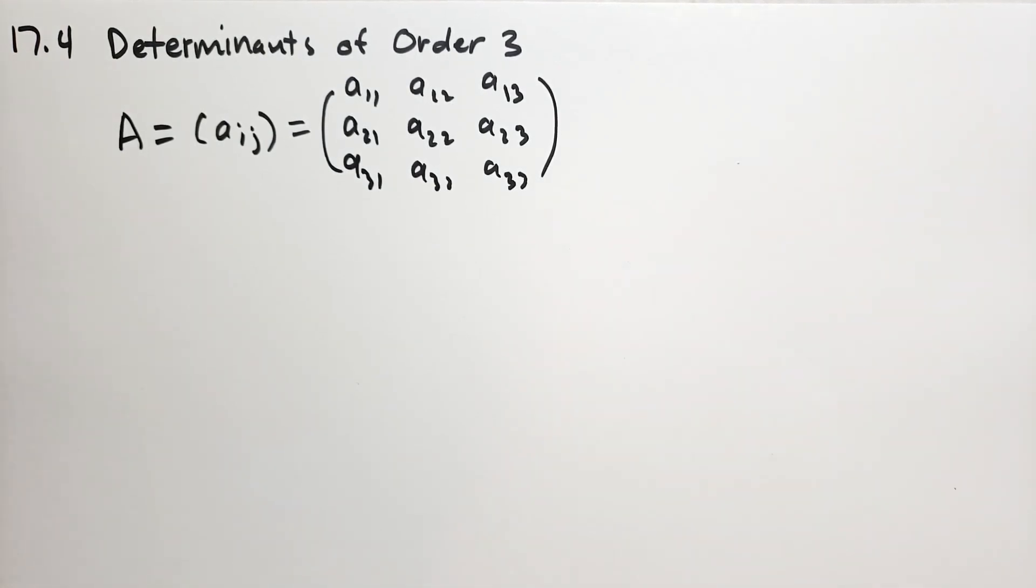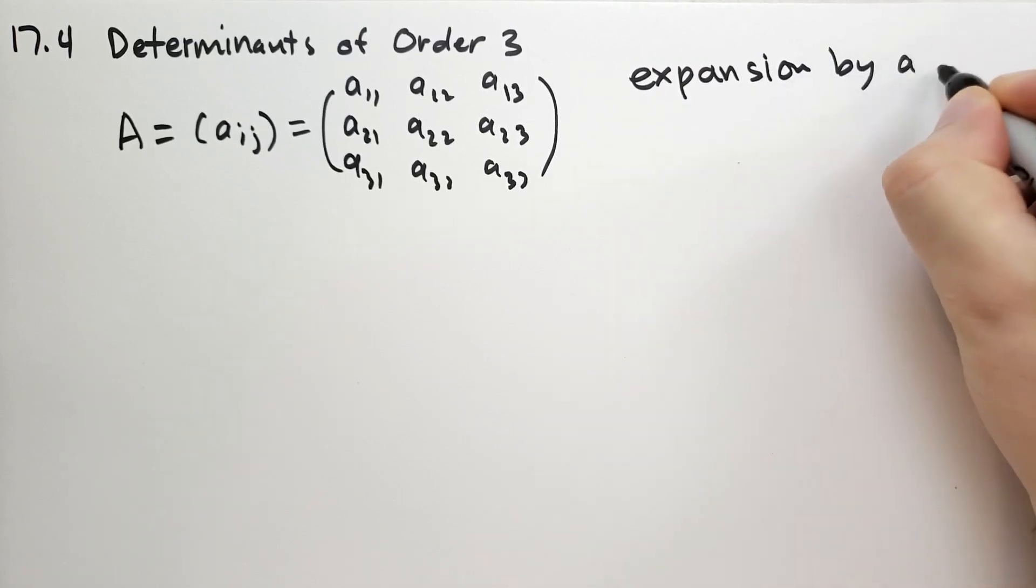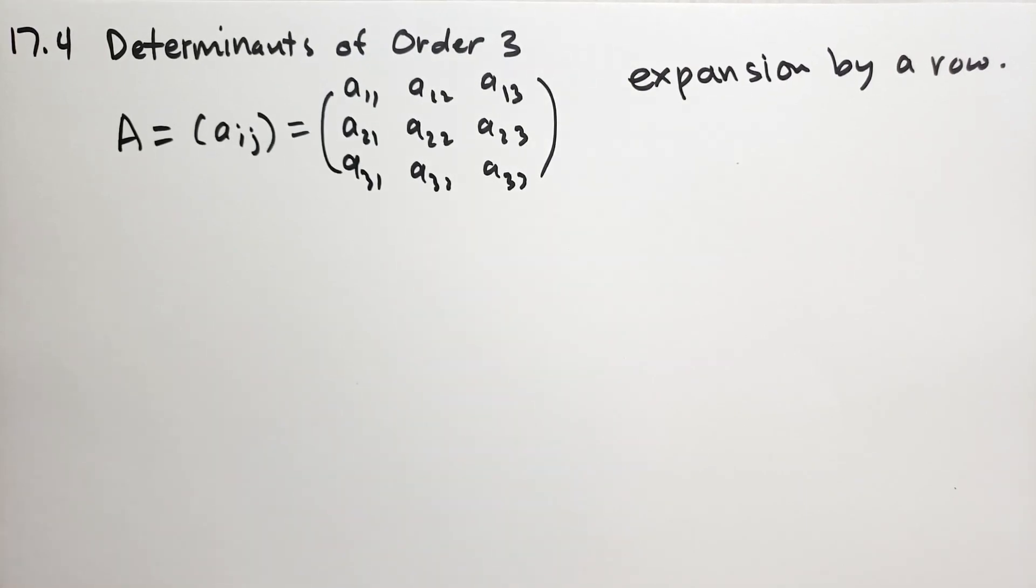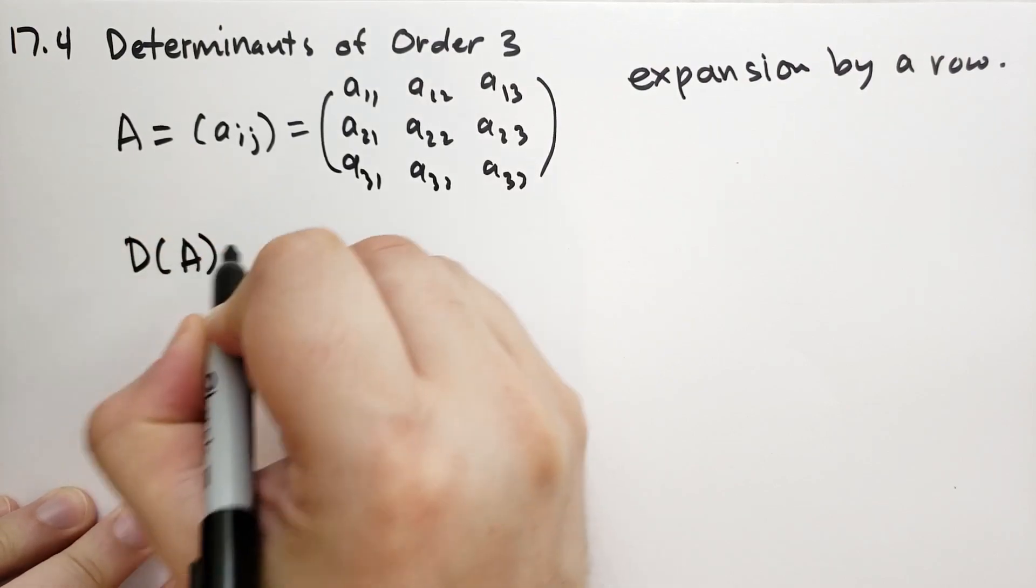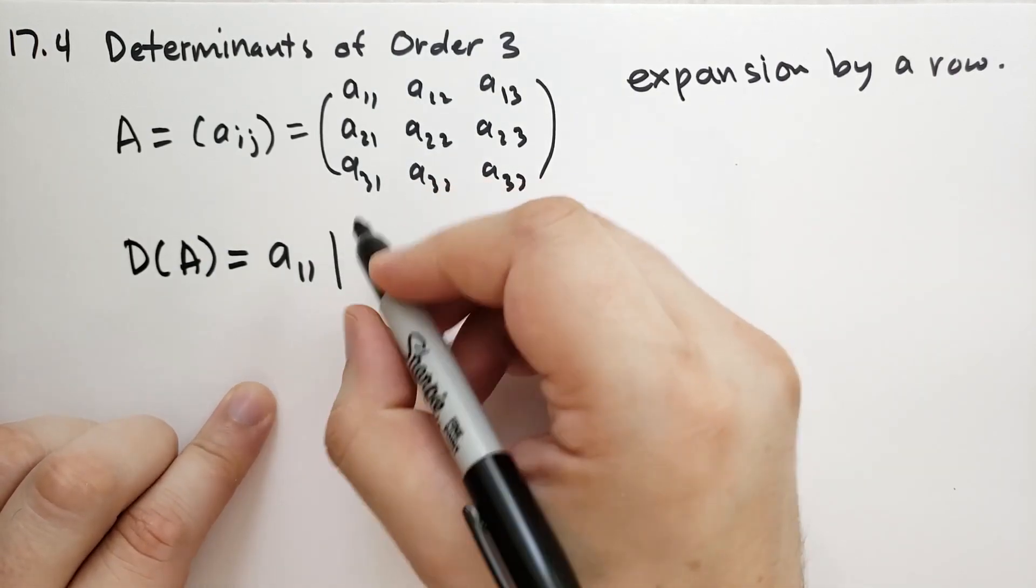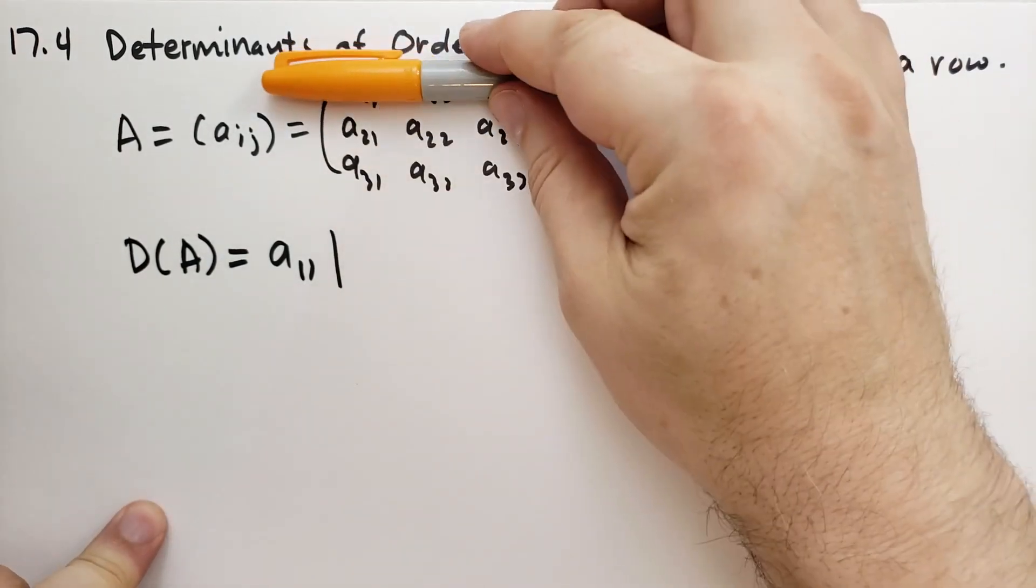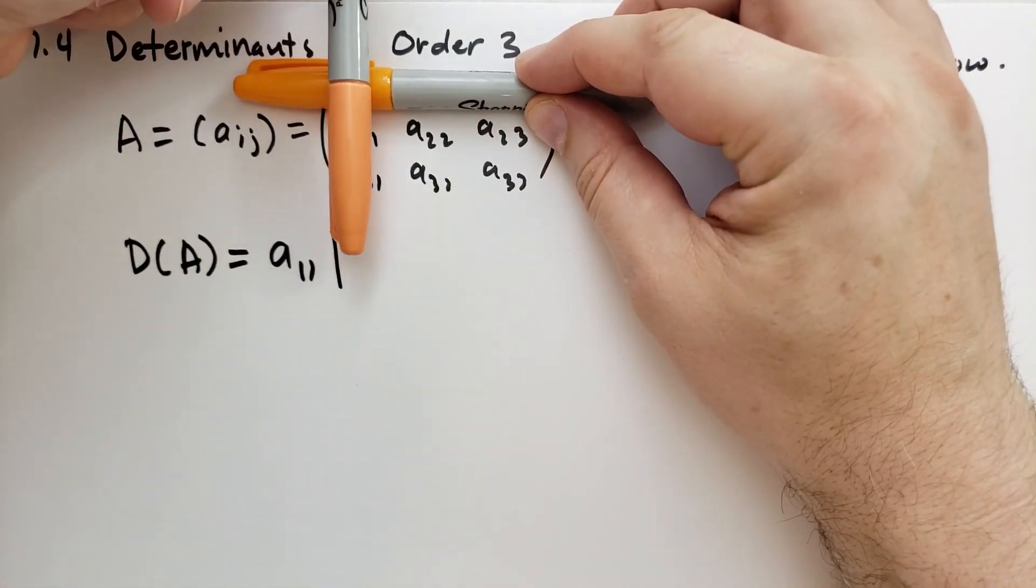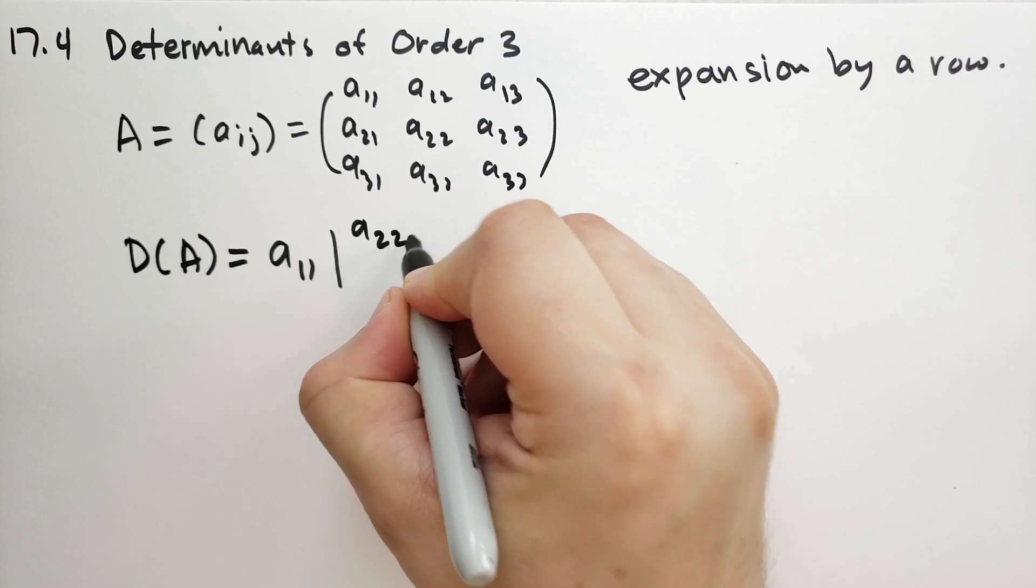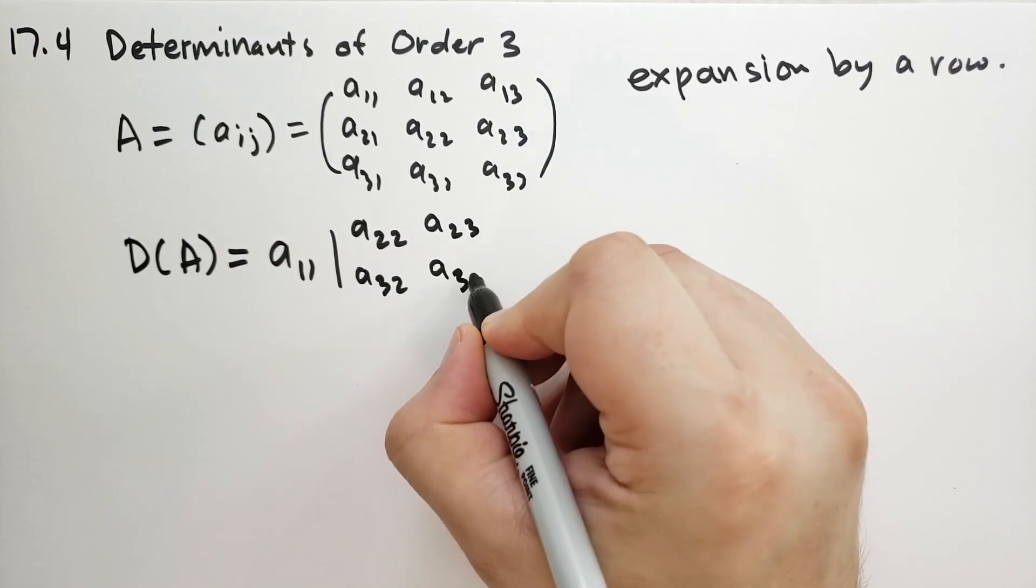So we define this determinant according to the formula known as expansion by a row. And what this says is we don't know how to do determinants of order 3 but we do know how to do determinants of order 2. So we are going to break down this determinant of A. We're going to take the first row, so then we're going to multiply that by the determinant of everything else. So the trick is, I'm going to take these two pins, we're going to cross off the row and the column of the element of the row that we're taking the determinant of. So this is going to be A_22, A_23, A_32, and A_33.